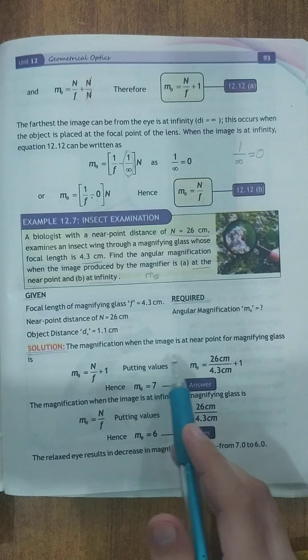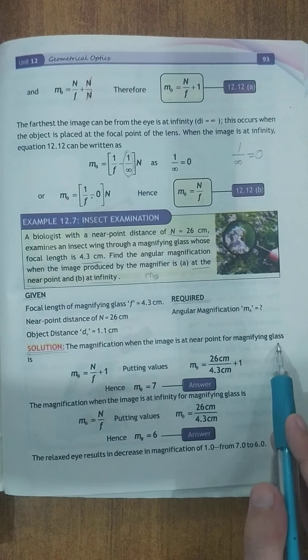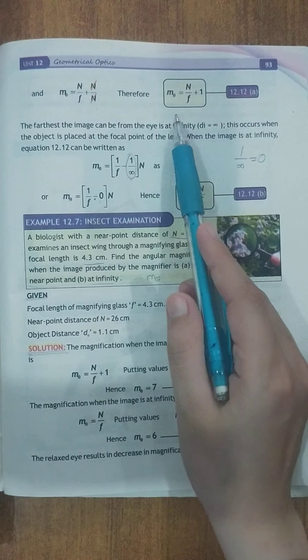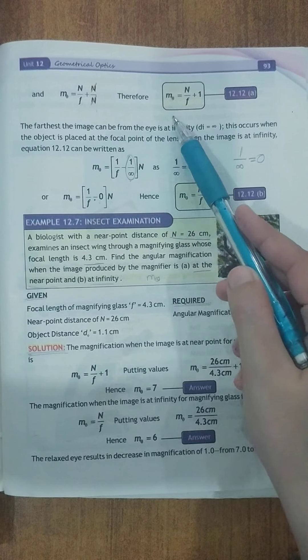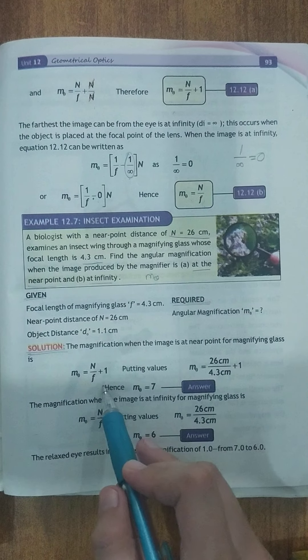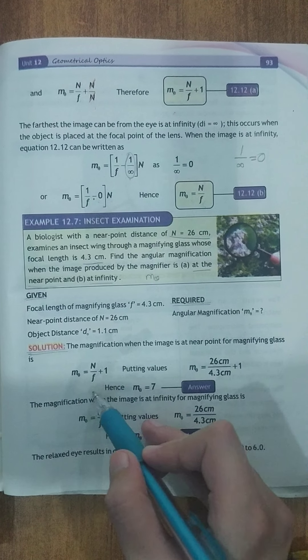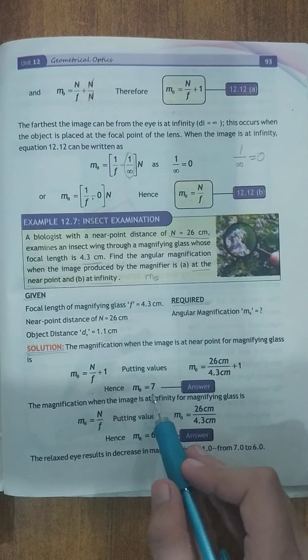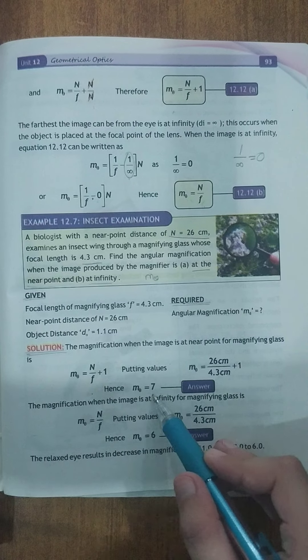The magnification when the image is at the near point for magnifying glass. Humne equation padha ta. Jab image near point peh ho, magnification ki liye yeh wala formula use karat hai. N or f ki value given hai. Aap values put kaat, to aap ke paas m theta ki value 7 aa raay hai.